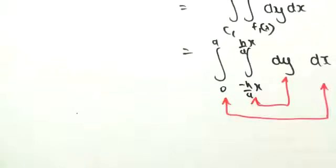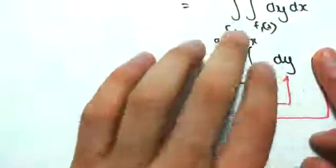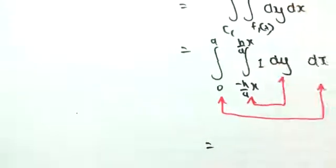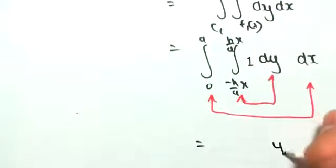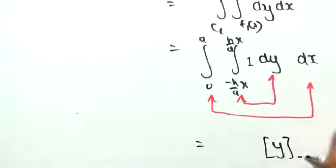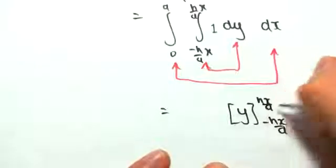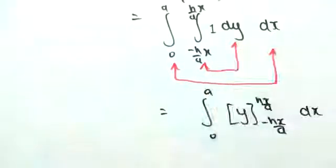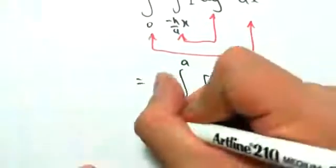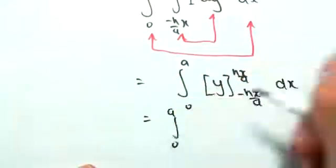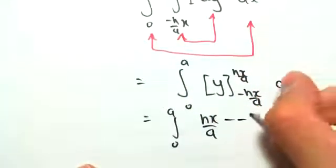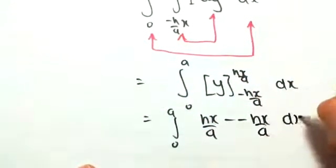If we integrate this, so we're going to be doing the inner integral first, this integral here. If there's a little imaginary 1 there, so if you integrate 1 for dy, you would get y outside of minus h x on a, h x on a. We have a dx on the outside and still a 0 a on the outside. So if we sub this in, we would get integral from 0 to a, subbing in for y, we would get h x on a minus minus h x on a, dx.